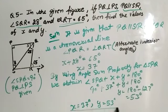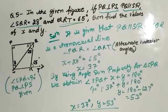So the final answer is X equals 37 degrees and Y equals 53 degrees. I used alternate interior angles, the transversal line, and the angle sum property of a triangle. In the next video we will talk about your next question. Thank you so much.